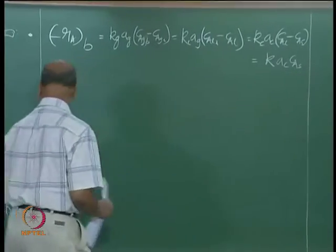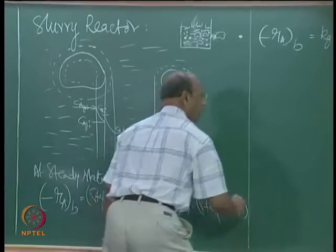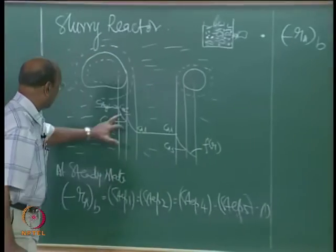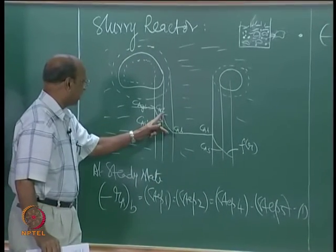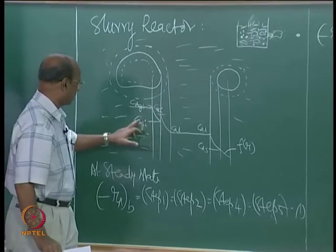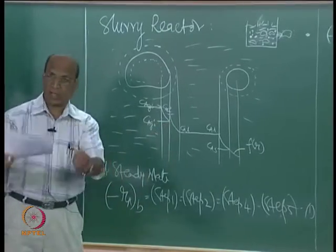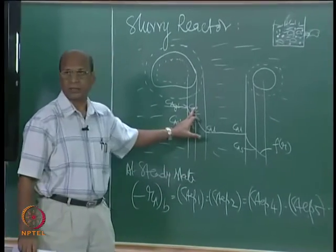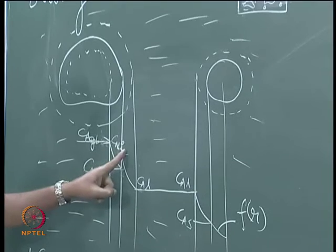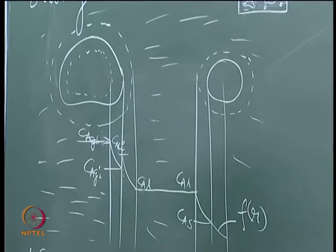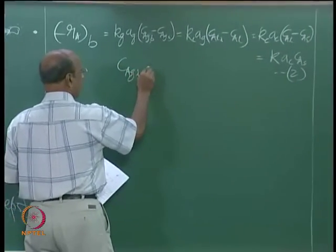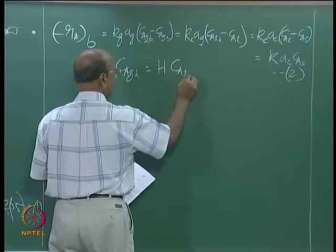Now this is equation 2. Here I need a relationship at the interface: C_AgI is coming to the interface, now it is dissolving - after dissolving it shows C_ALI. That is why at the interface we have written both C_AgI and C_ALI. How you connect this is Henry's law: C_AgI equals H times C_ALI. This is equation 3.